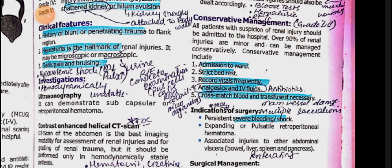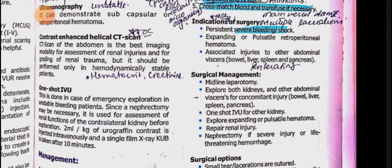Indications for surgery in renal trauma — very important: expanding hematoma, associated injuries to abdominal viscera (bowel, liver, spleen, pancreas), multiple lacerations, and penetrating trauma. If these are present, you perform surgery; otherwise conservative management covers 90% of blunt injury patients.